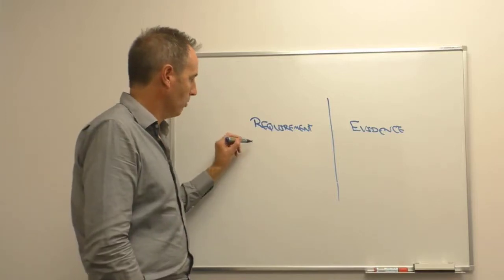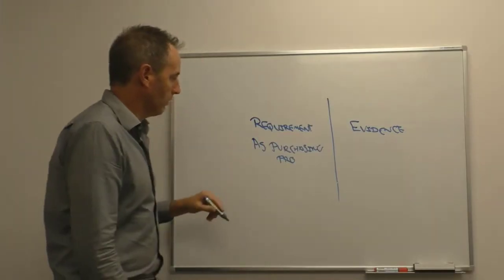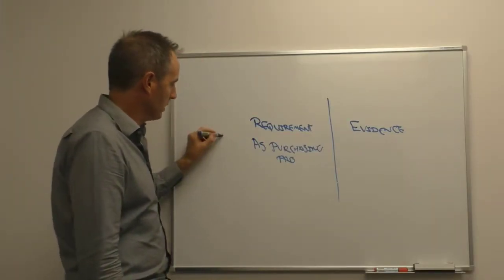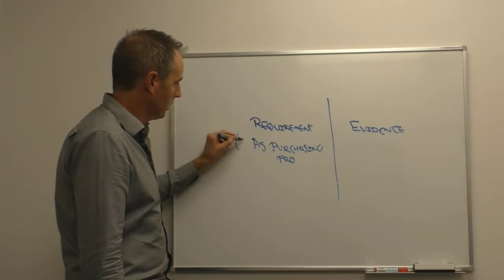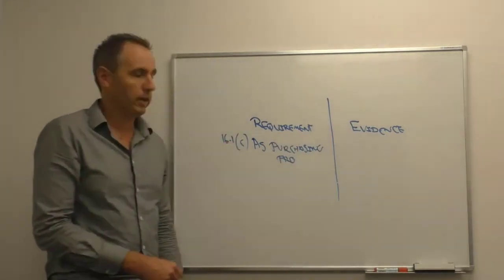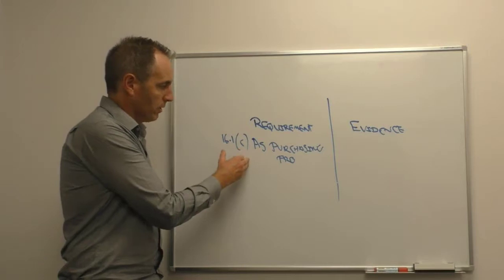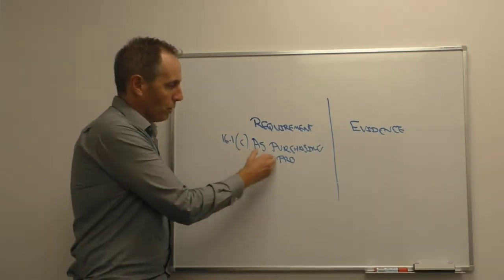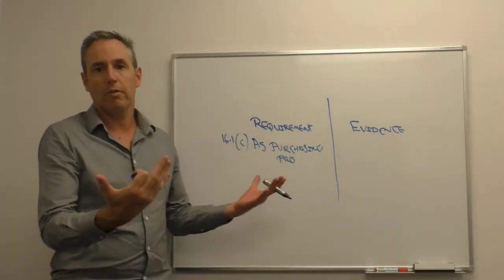I don't just say as per purchasing procedure. I'll be specific if that's as required by 16.1c of the purchasing procedure, that's what I put in there, as required by 16.1c of the purchasing procedure, not all purchase orders over $10,000 were signed off by the general manager.